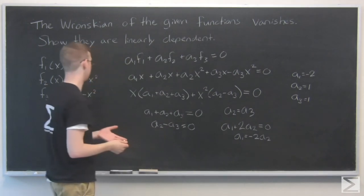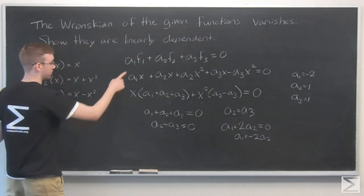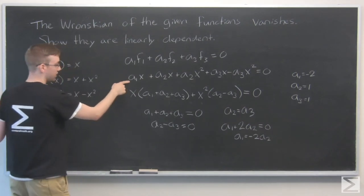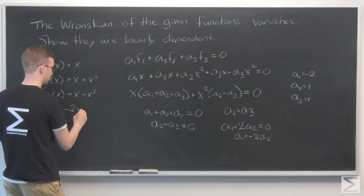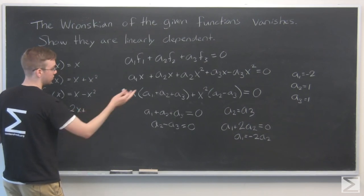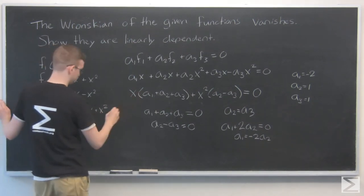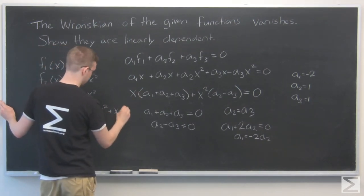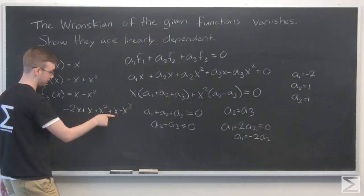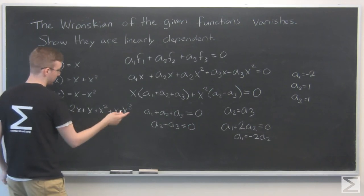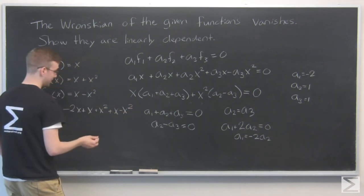This should be one example that works. Let's verify by plugging in these values: -2x + 1(x + x²) + 1(x - x²). Does this equal zero? -2x + x + x = 0, and x² - x² = 0. Yes, it works.